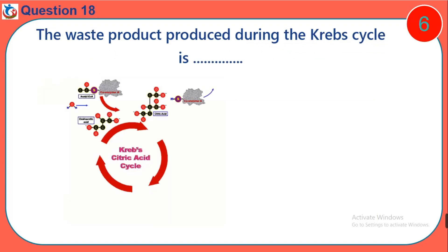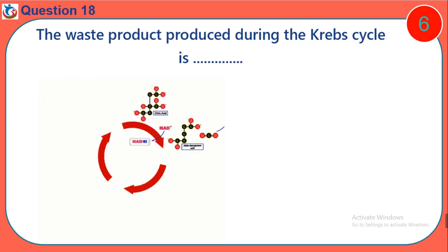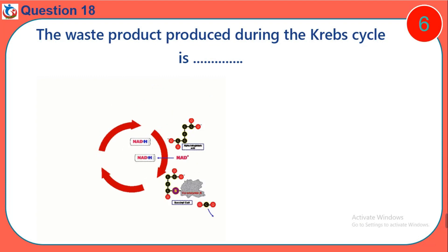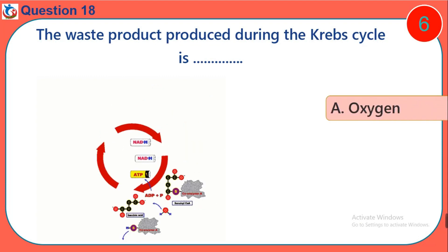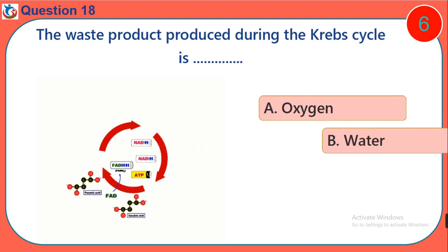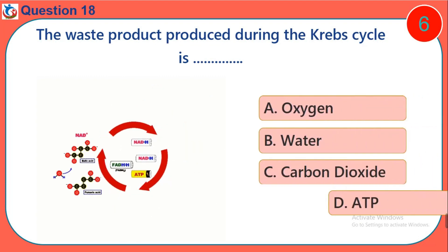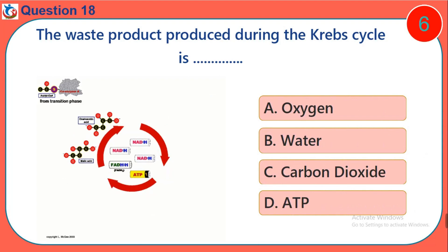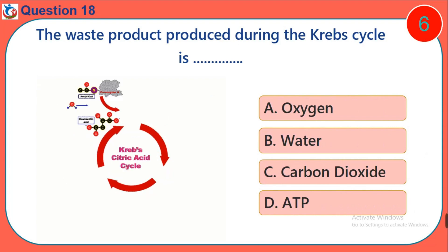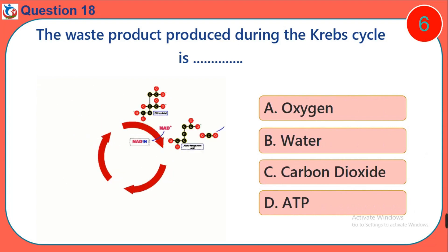Question 18. The waste product produced during the Krebs cycle is: A. Oxygen. B. Water. C. Carbon dioxide. D. ATP.